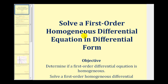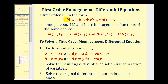Welcome to part two of solving a first order homogeneous differential equation written in differential form. A first order DE written in differential form is homogeneous if functions M and N are homogeneous functions of the same degree, which means M(TX, TY) must equal T raised to some power times the original function, and N(TX, TY) must also equal T raised to the same power times N. So these two exponents must be the same in order for M and N to be homogeneous functions of the same degree, giving us a homogeneous differential equation.